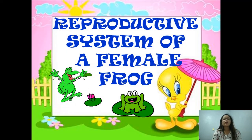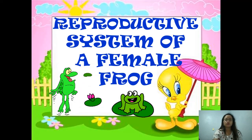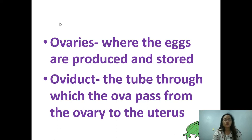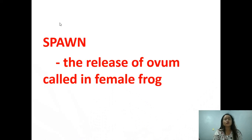Now the reproductive system of a female frog. The ovaries are where the eggs are produced and stored. The oviduct is the tube through which the ova pass from the ovary to the uterus — it is a passageway from the ovary to the uterus. Spawn is the release of ovum by the female frog.